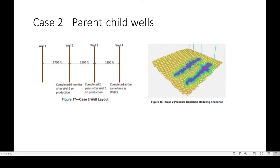Case 2 covers the parent-child wells. The scenario shown on the left has a parent well, then 1,700 feet away a well completed six months after well 1, then 1,500 feet away well 1 has been put onto production, and well 4 has been completed at the same time as well 3. The figure on the right shows the pressure depletion modeling snapshot for each subsequent well.